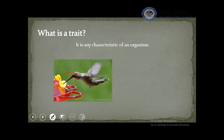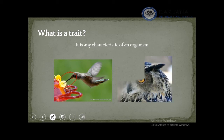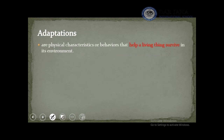For example, this hummingbird has a long beak that can be used to take its food, and this other one has a short and sharp beak to take their own food. Adaptation is the characteristic or behavior that helps a certain living thing to survive or stay alive — it could be both characteristics or behavior.